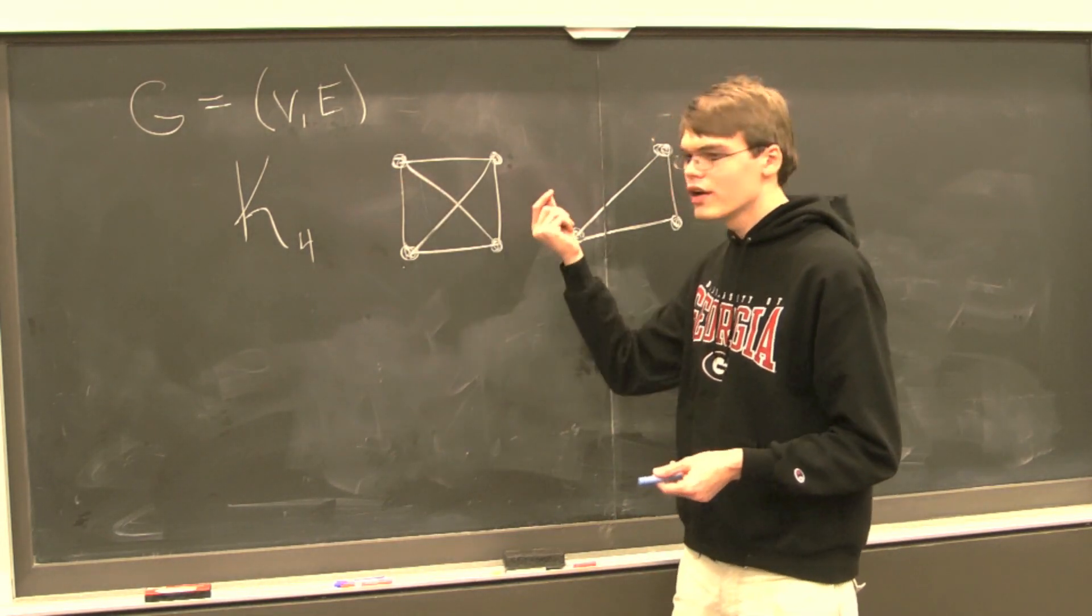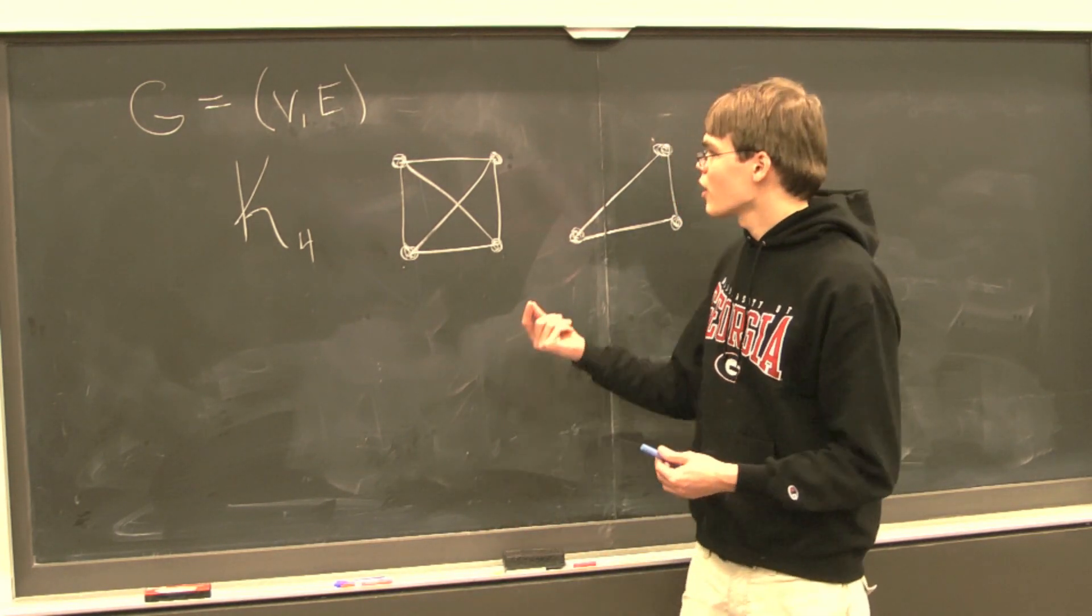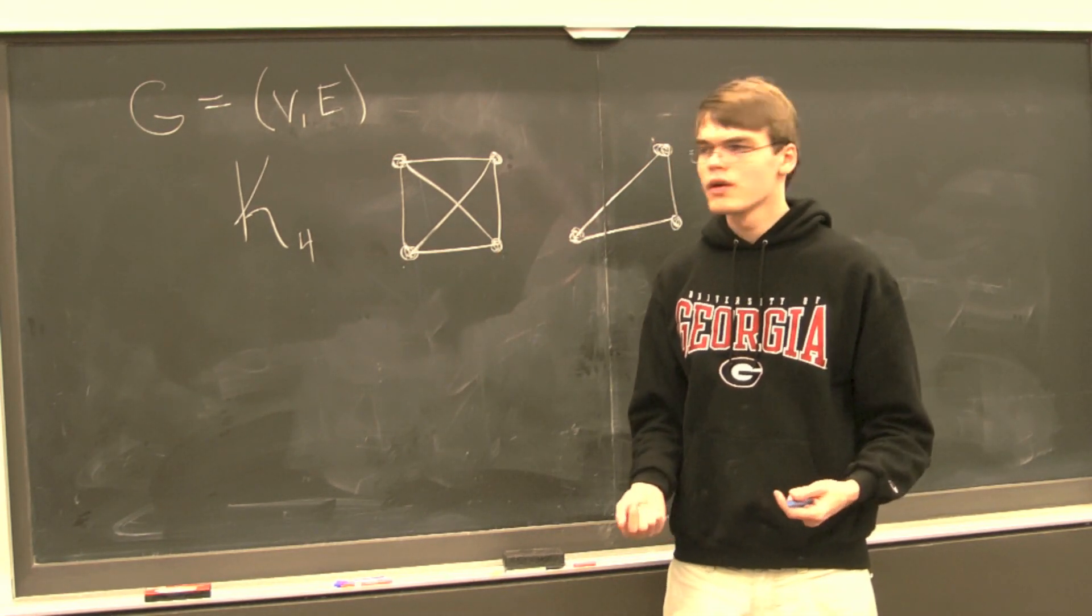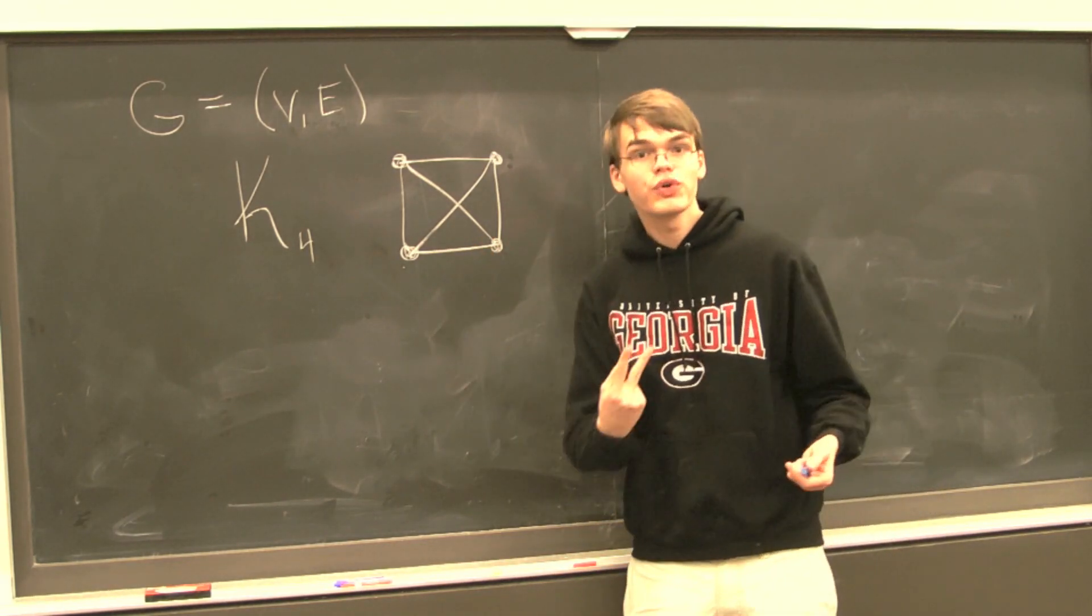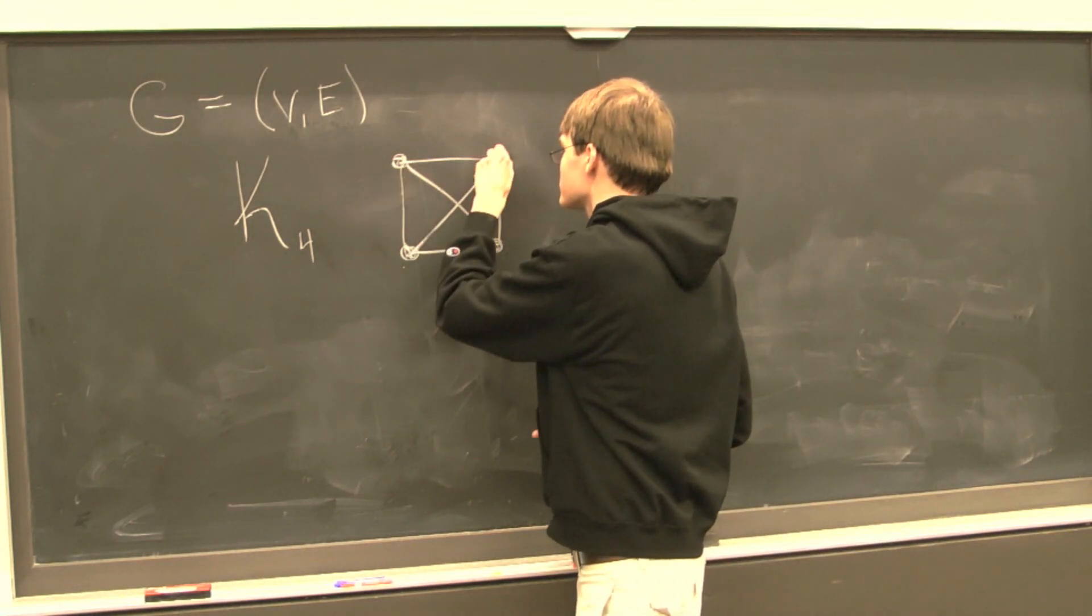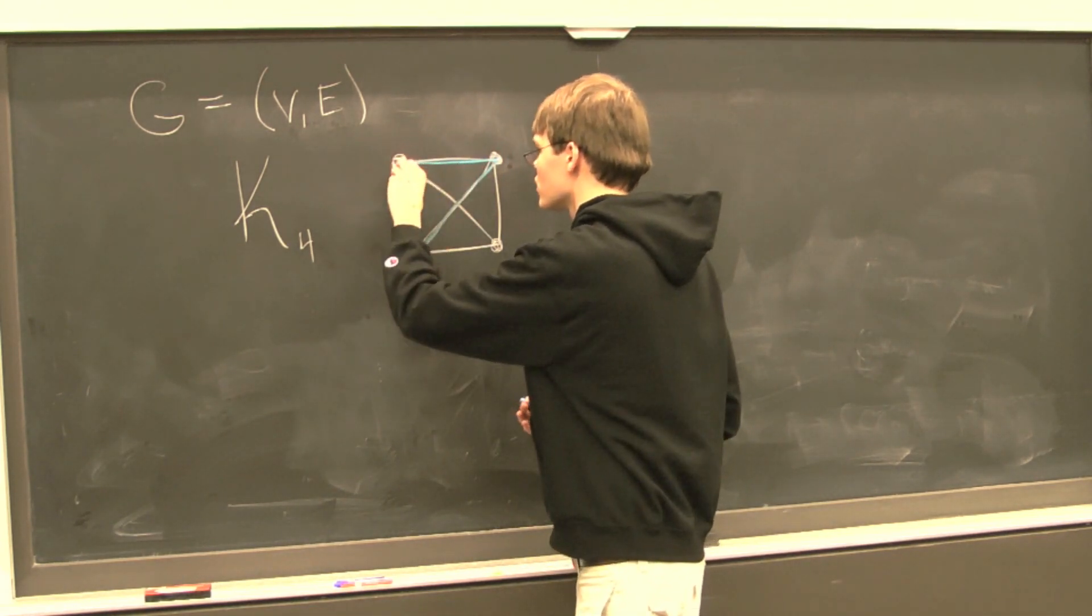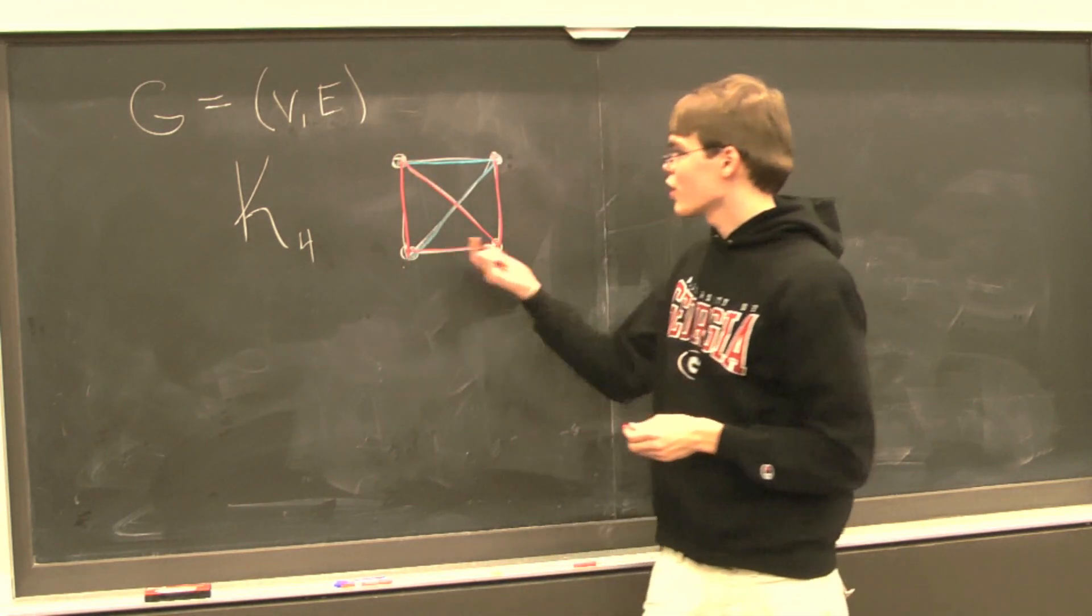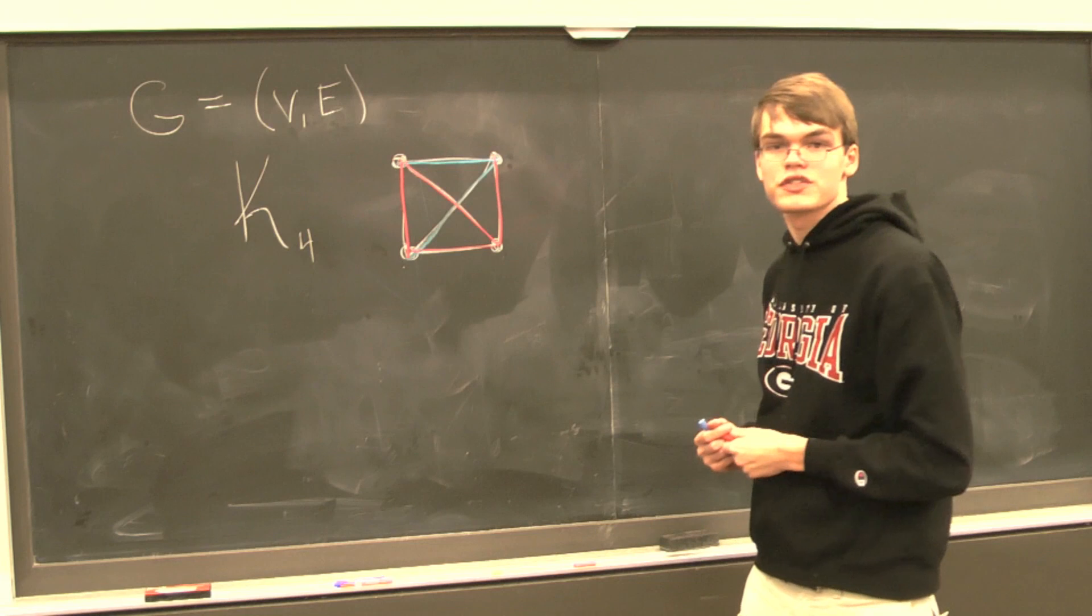And we simply color every edge of a graph with one of those colors. For example, a possible coloring of K4, a two coloring I might add, might look something like this. This is one possible two coloring of K4. We have two blue edges and the rest of the edges are red.